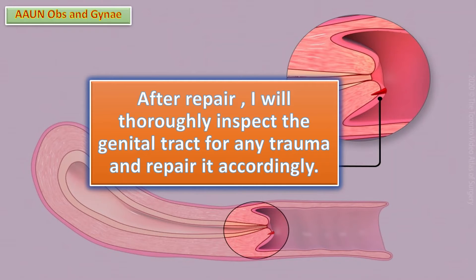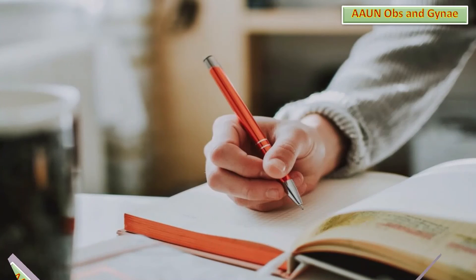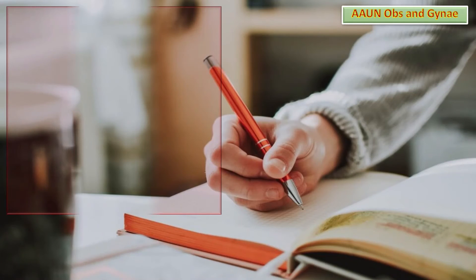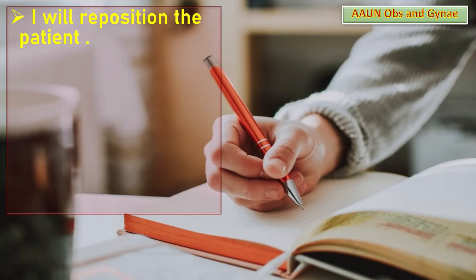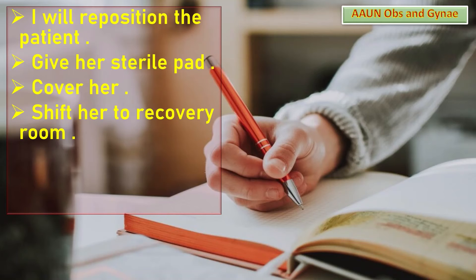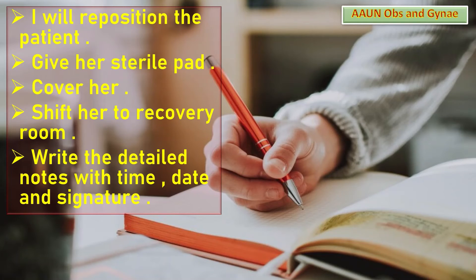After repair, I will thoroughly inspect the genital area for any trauma and repair it accordingly if any other trauma is found. At the end of the procedure, I will reposition the patient, give her a sterile pad, cover her, and shift her to the recovery room. I will then write detailed notes with the date, time, and signature.